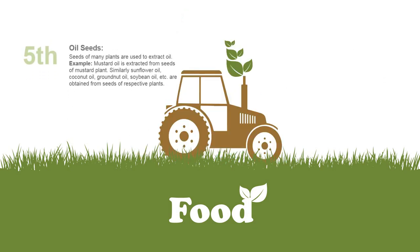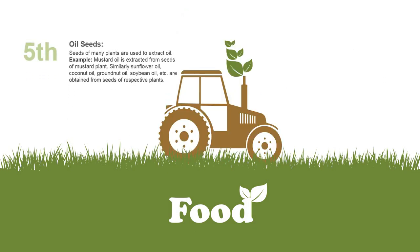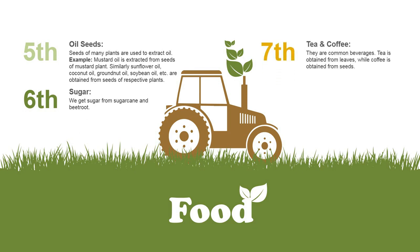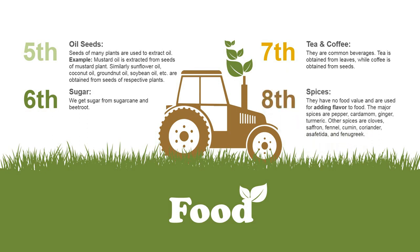Next are oil seeds. Seeds of many plants are used to extract oil. For example, mustard oil is extracted from seeds of the mustard plant. Similarly, sunflower oil, coconut oil, groundnut oil, soybean oil, etc. are obtained from seeds of their respective plants. Next is sugar — we get sugar from sugarcane and beetroot. Next, tea and coffee are common beverages. Tea is obtained from leaves while coffee is obtained from seeds.